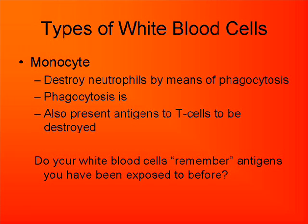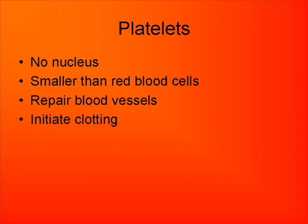Do your white blood cells remember antigens you've been exposed to before? The answer is yes, and that's how vaccines work. Now, the other type of cell mentioned at the beginning of this lecture was platelets, or thrombocytes, which are involved in the process of blood clotting. Just like red blood cells, they do not have a nucleus. They're actually much smaller than red blood cells, and because they're involved in clotting, these are the things that repair your blood vessels.